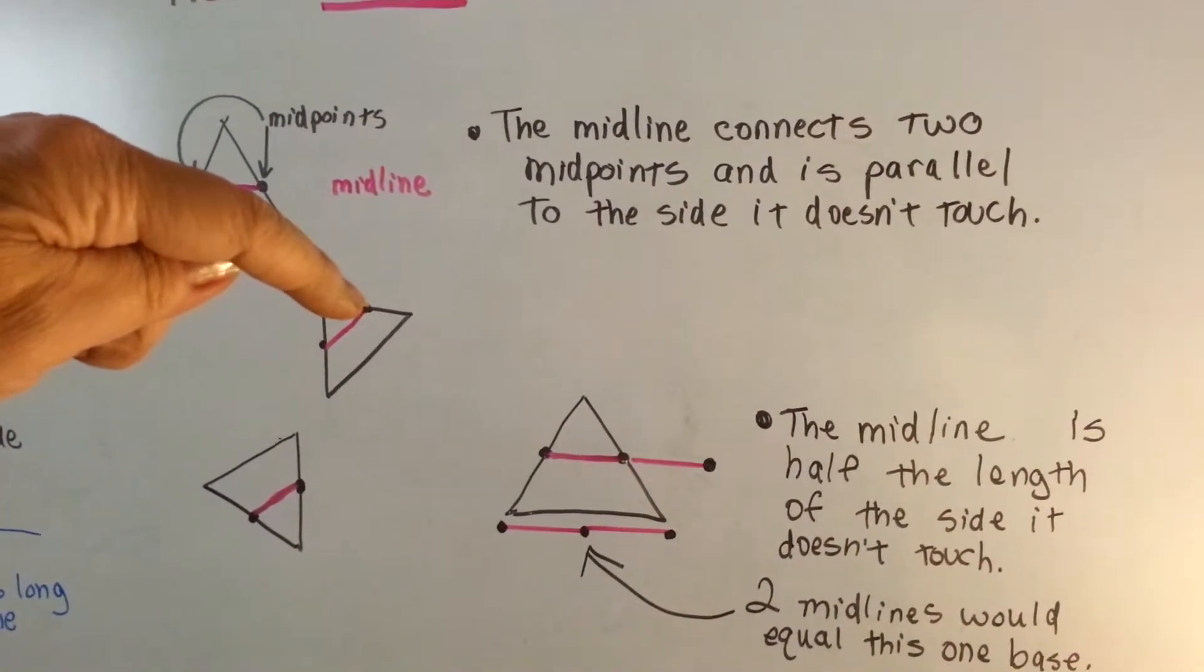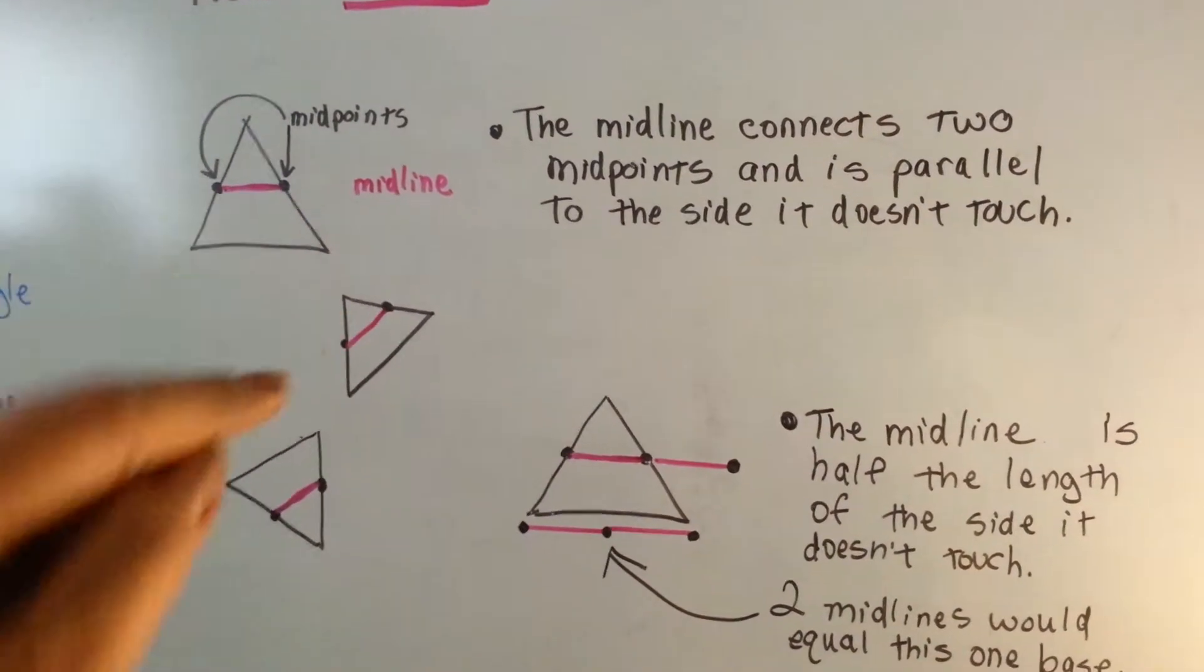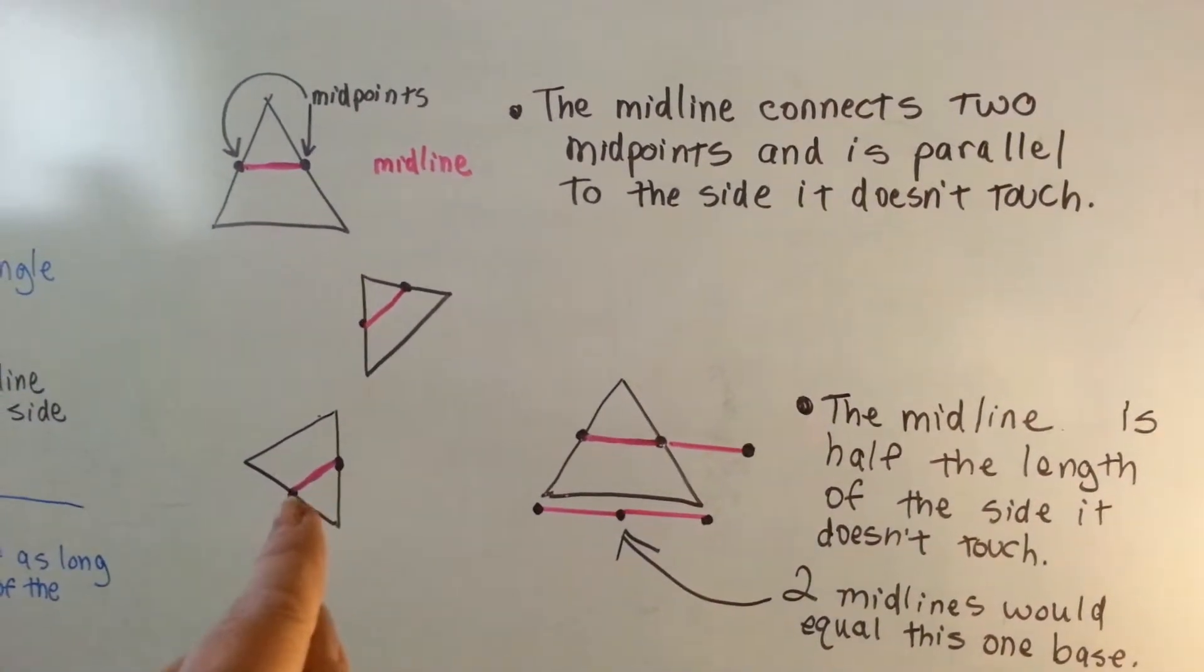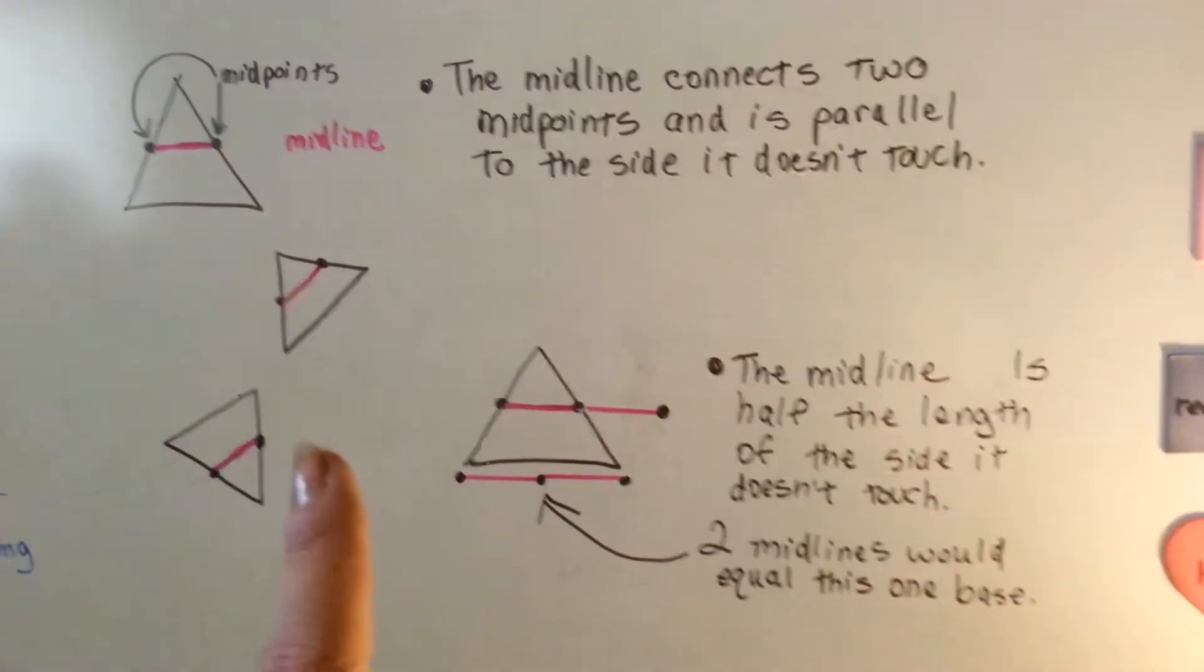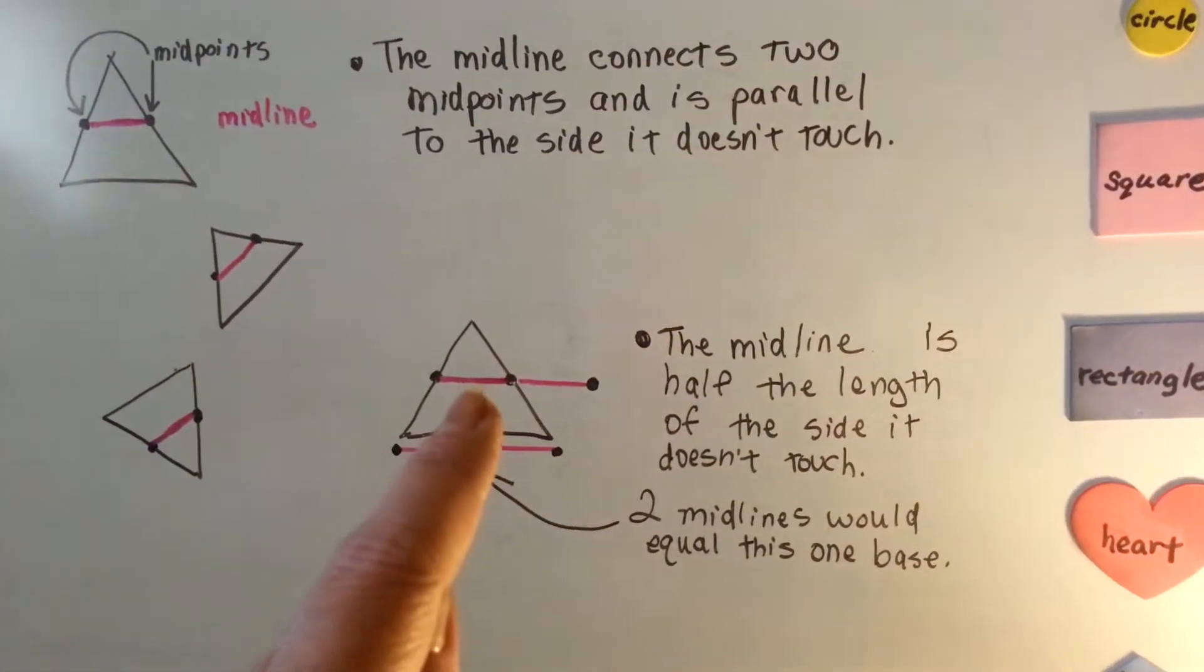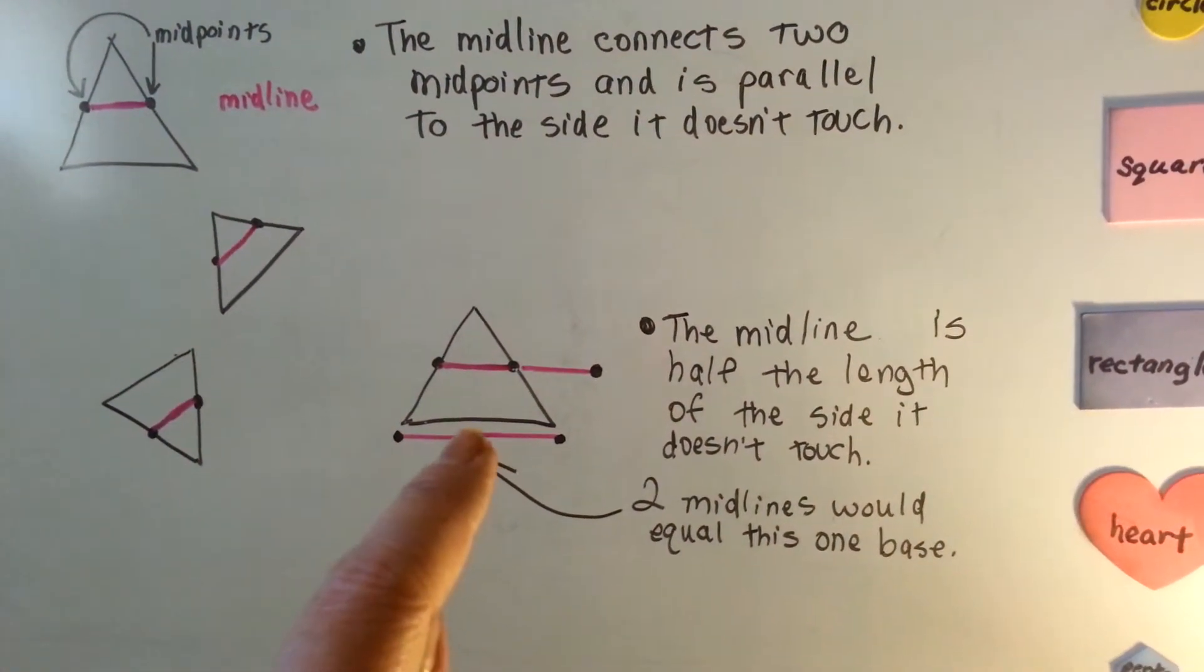So, here's another midline. It's coming from this midpoint to that midpoint. Here's another one. It's going from this midpoint to that midpoint. Now, what's cool about the midline is it is half the length of this baseline right here.